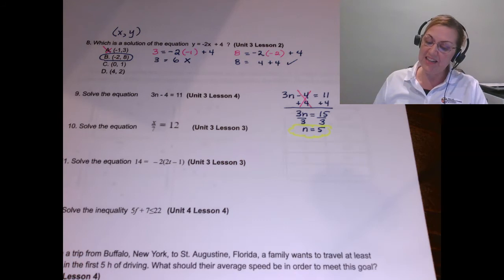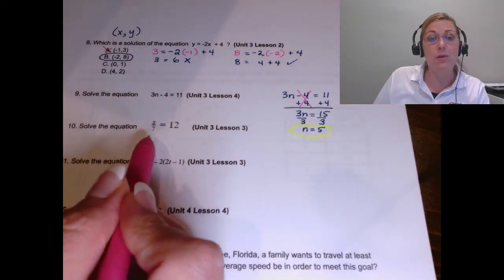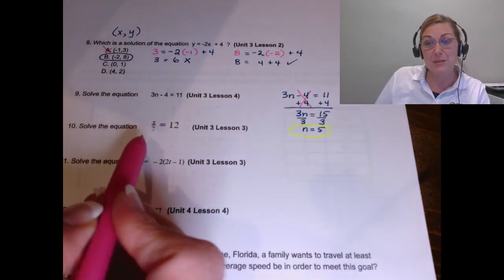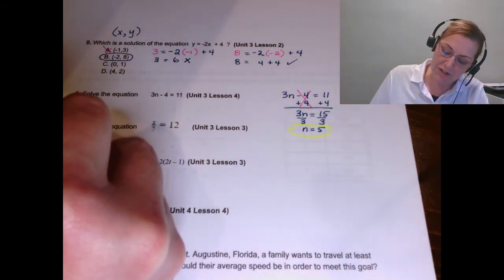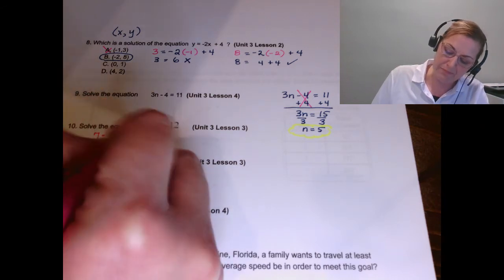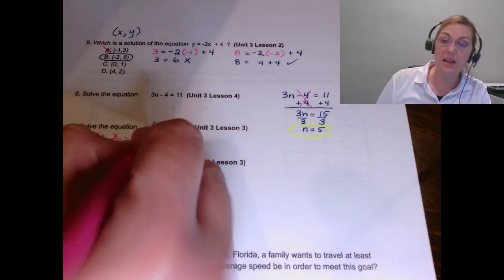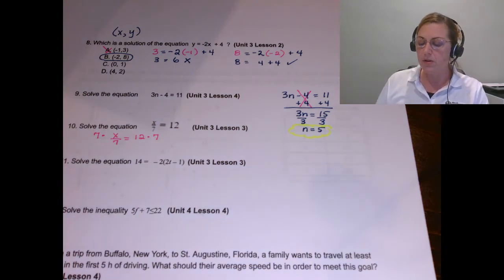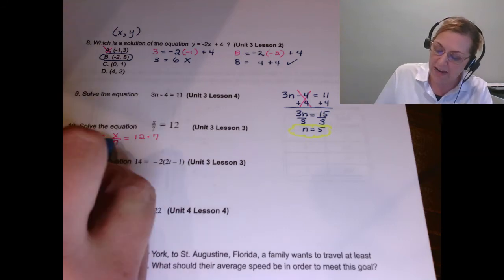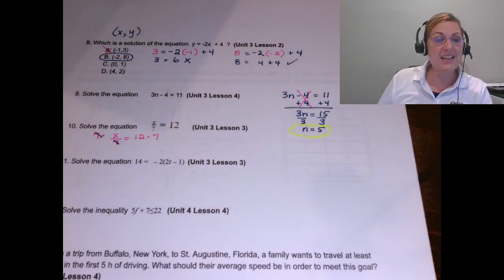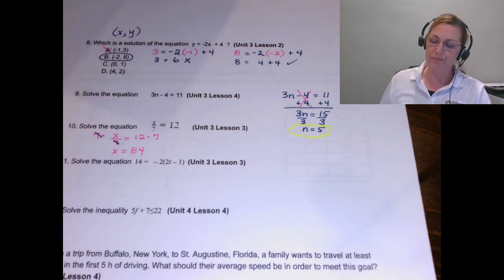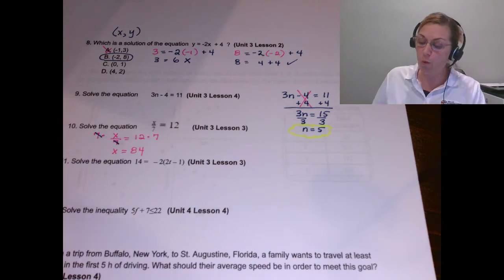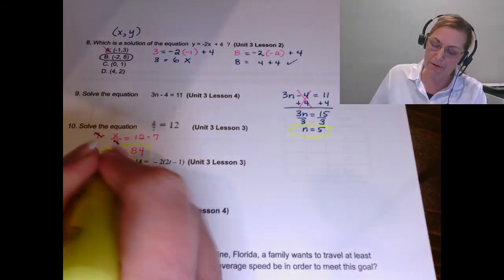Let's look at number 10 then. Ask yourself again, what's happening to the variable? X is being divided by seven. So we're going to do the opposite of dividing by seven, which is to multiply both sides by seven. When I say both sides, I mean both sides of the equation, because we know that seven, multiplying by seven and then dividing by seven will cancel. And I get this X by itself, X equals 84. So I only had one thing to do to get the variable by itself in that problem.